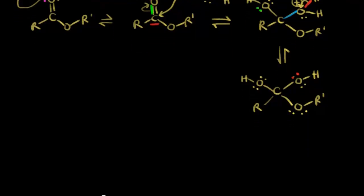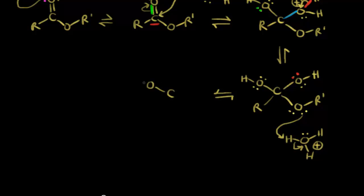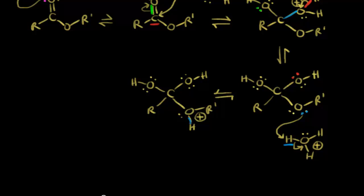In the next step of the mechanism, we're going to protonate that oxygen. Hydronium is present — H3O+ — so this oxygen is going to pick up a proton from hydronium, leaving these electrons behind. We're going to protonate that oxygen because it turns it into a better leaving group. So we have our OH groups at the top, our R group on the left, and our oxygen which has been protonated now has a +1 formal charge. This lone pair is going to take this proton, forming this bond right here.